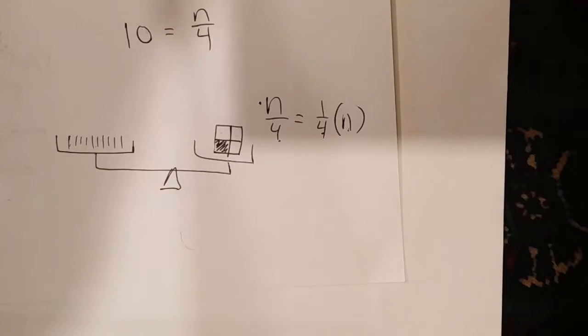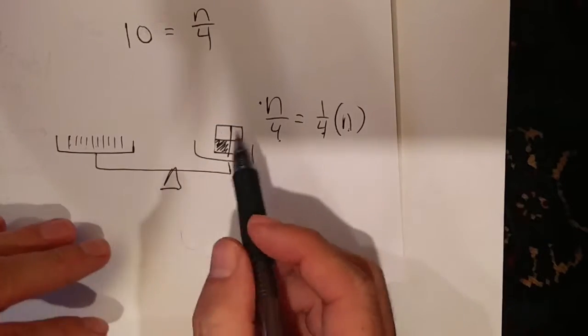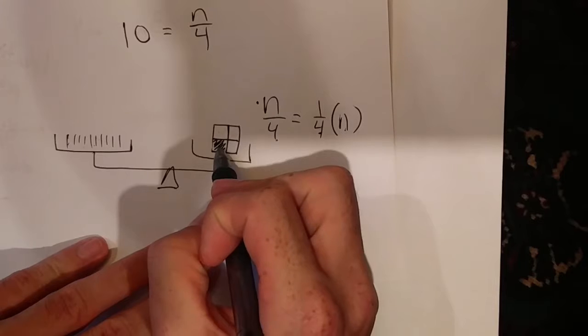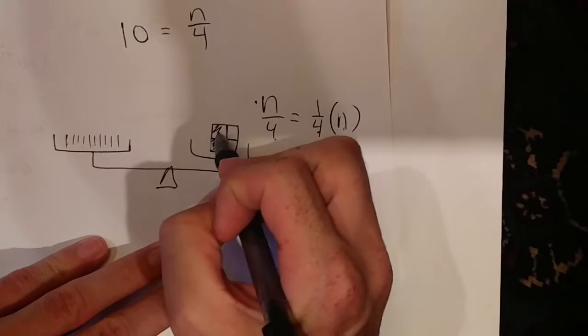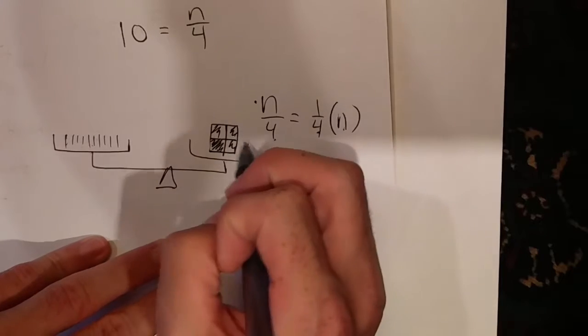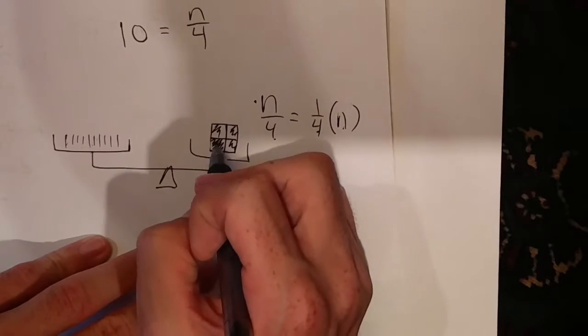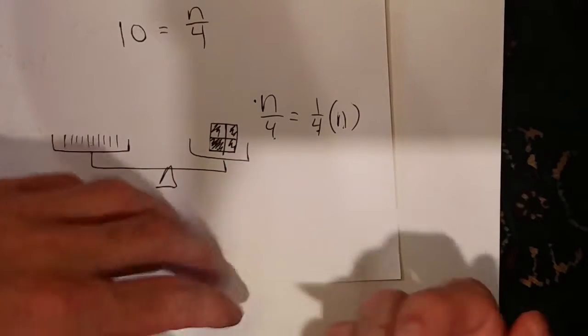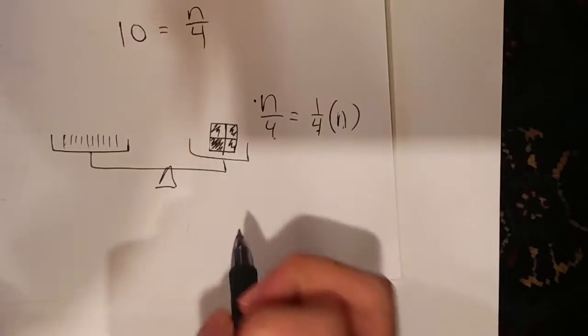And that's exactly what we're doing here. So over here I can say I don't need one fourth, I need the one fourth, two fourths, three fourths, or four fourths to get the whole thing, or I need one fourth four times. And that's exactly what we're going to show here.